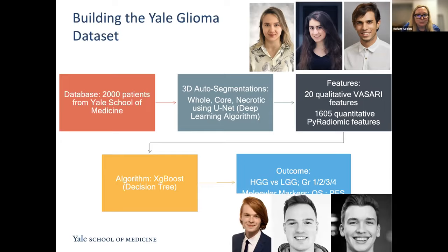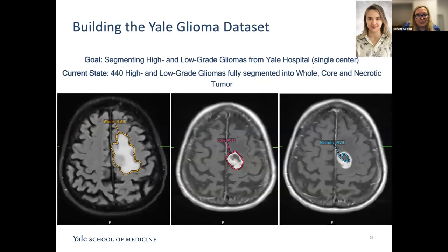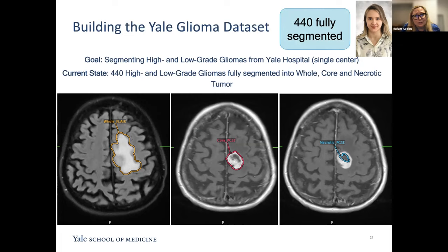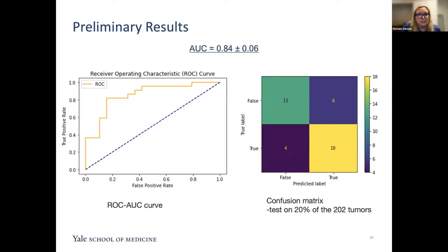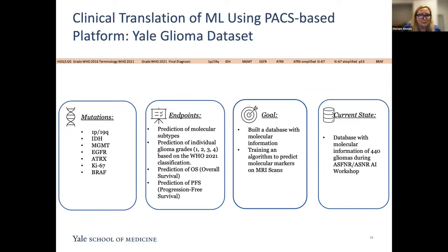Initial work was done by our student Sarah Merkai, along with Eva Kazarian and Tal Zivi. Sarah started the Yale Glioma dataset from getting the database of patients to downloading images to performing segmentations and classifications. In just one summer, she performed segmentations of the whole tumor, the enhancing core, and the necrotic portion — doing 440 fully segmented tumors. She was also able to show that you can gradually train the algorithm on Yale data and start getting high DICE scores with very minimal data trained on Yale dataset after transferring from BRATS.